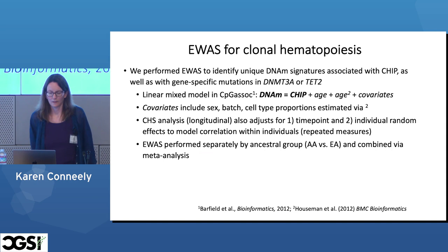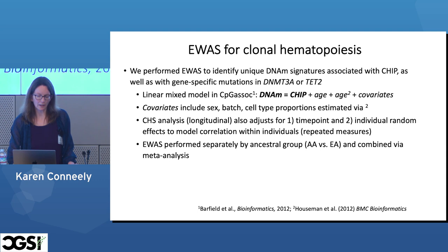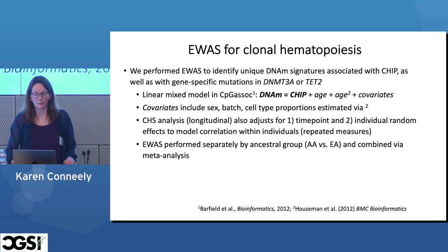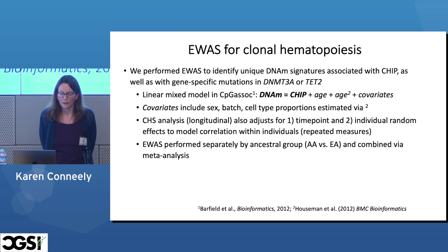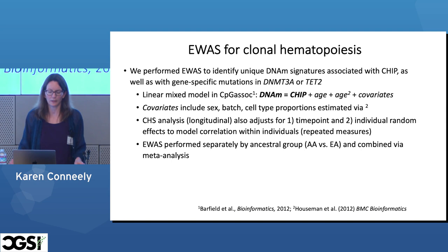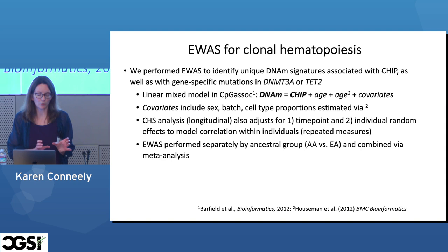We performed an epigenome-wide association study for clonal hematopoiesis using a linear mixed model that modeled DNA methylation as the outcome. Our independent variable of interest was CHIP: either the presence of CHIP, or the presence of a DNMT3A or TET2 mutation — three separate EWAS. Covariates included age and age squared, sex, batch, and estimated cell type proportions. Our Cardiovascular Health Study discovery analysis was longitudinal, so we also adjusted for time point and included individual random effects. Both discovery and replication included separate cohorts of African-American and European-American individuals, so we performed our EWAS separately within ancestral groups and then used the METAL software to combine via meta-analysis.